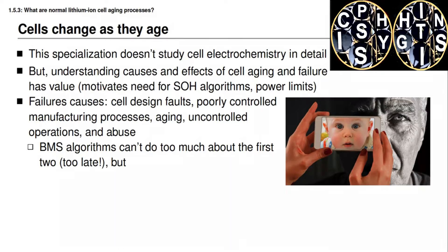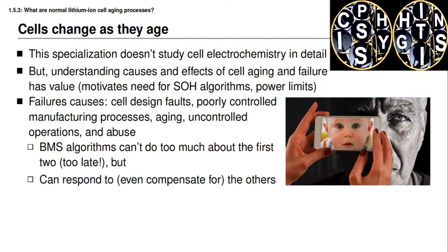So they can protect against some safety events, but they can't really do anything proactive at this point. However, it is possible in some cases to even compensate for other causes of failure of the battery cells. In this lesson we're going to look at what are the normal lithium-ion aging processes, and in the next lesson we'll look at some abnormal causes due to abuse.